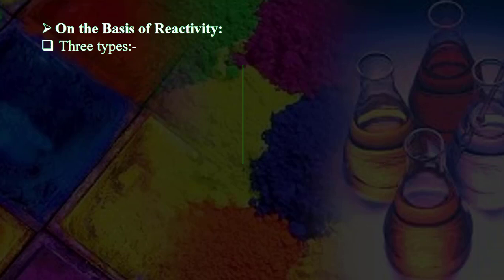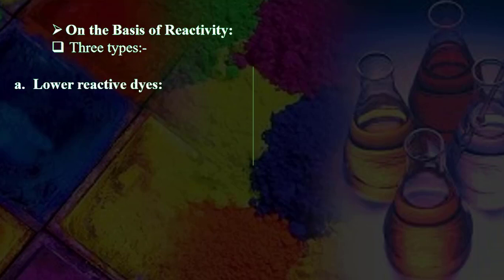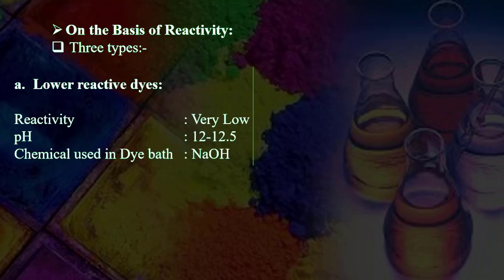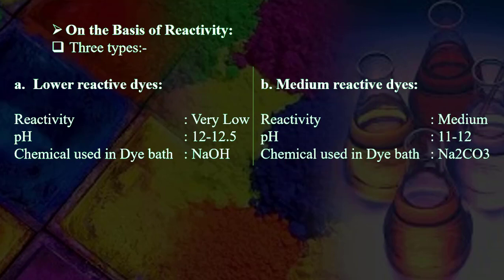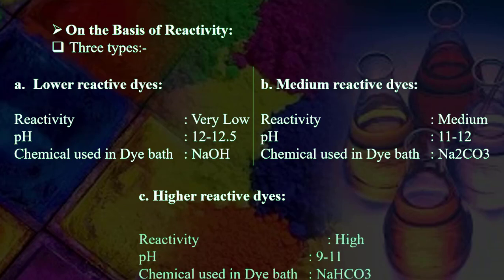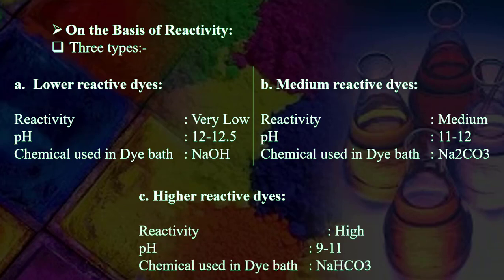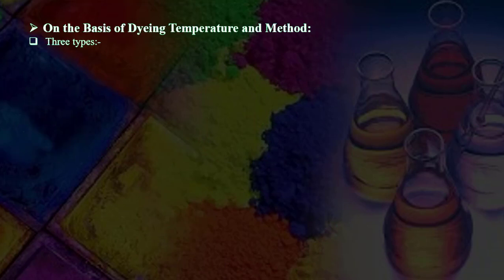Classification on the basis of reactivity — three types: (A) Lower reactive dyes: very low reactivity, pH 12 to 12.5, chemical used — NaOH. (B) Medium reactive dyes: medium reactivity, pH 11 to 12, chemical used — sodium carbonate. (C) Higher reactive dyes: high reactivity, pH 9–11, chemical used — sodium hydrogen carbonate.